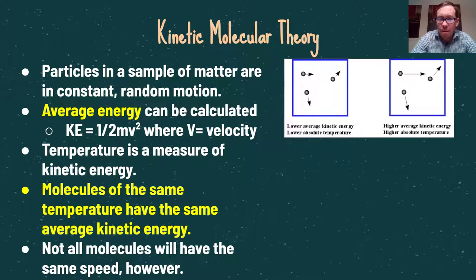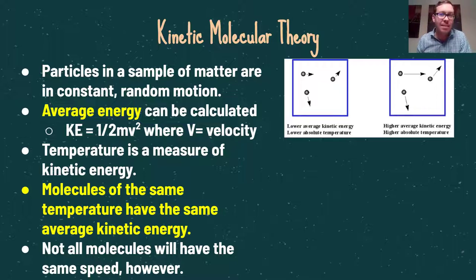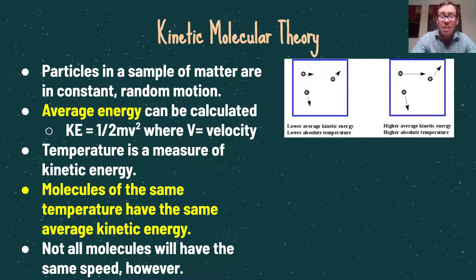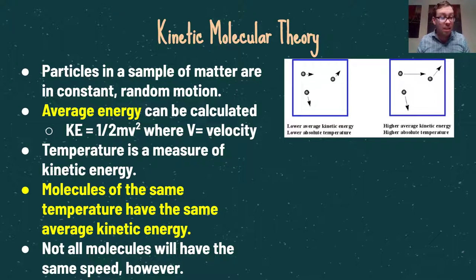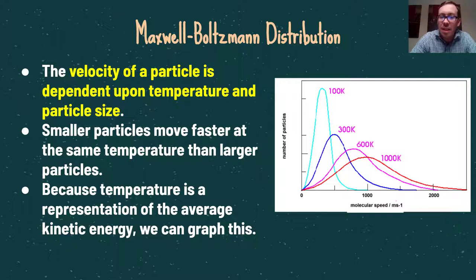Kinetic molecular theory states that particles in any sample of matter are always in constant and random motion — including solids, liquids, and gases. Solid molecules move slower than liquids and gases because temperature is a measure of kinetic energy: the higher the temperature, the more kinetic energy molecules have. Average kinetic energy is calculated using KE = ½mv², where m is mass and v is velocity. Molecules at the same temperature have the same average kinetic energy, but velocity also depends on particle size.